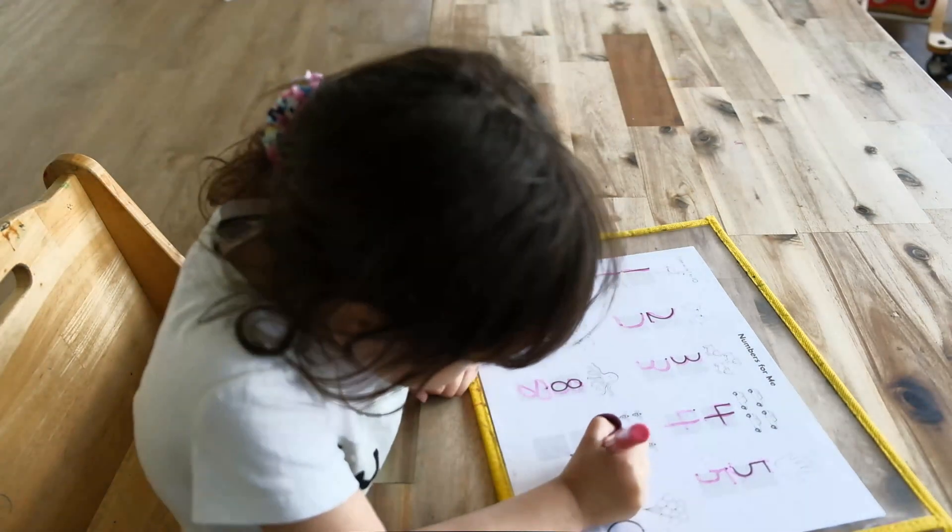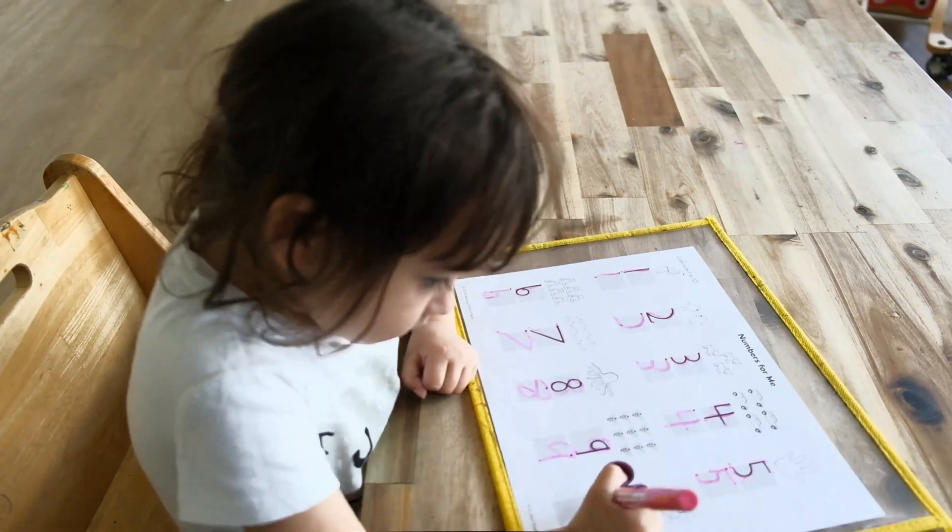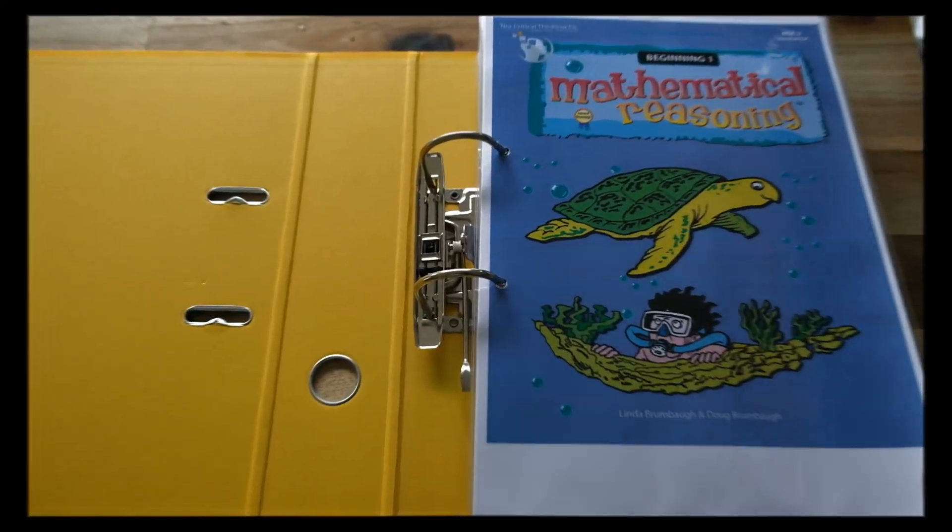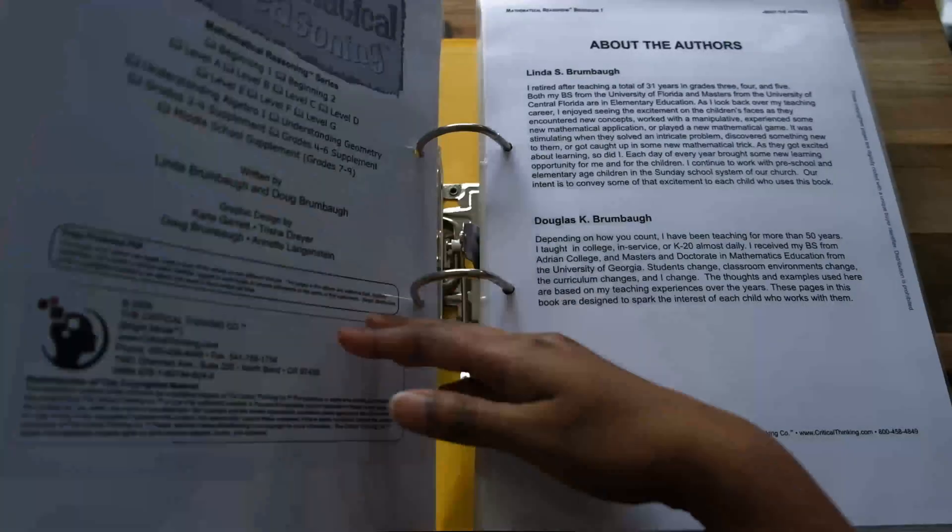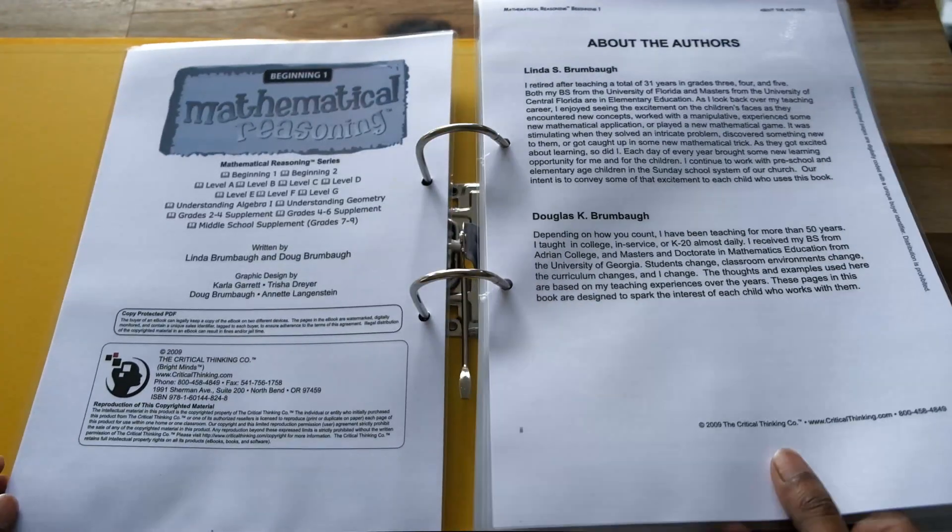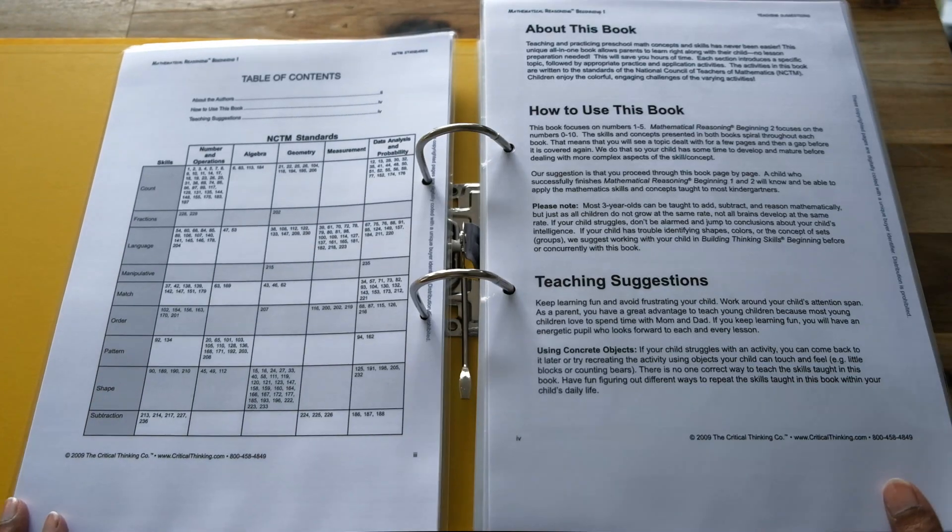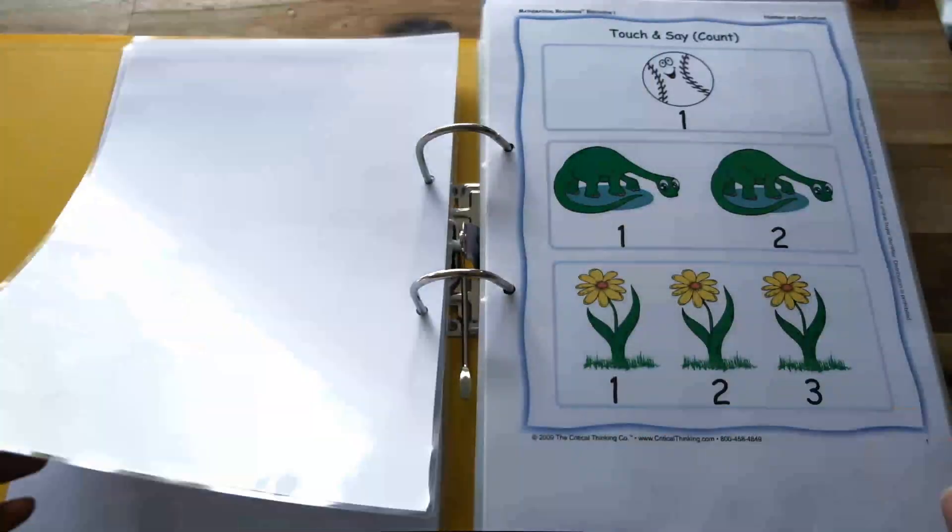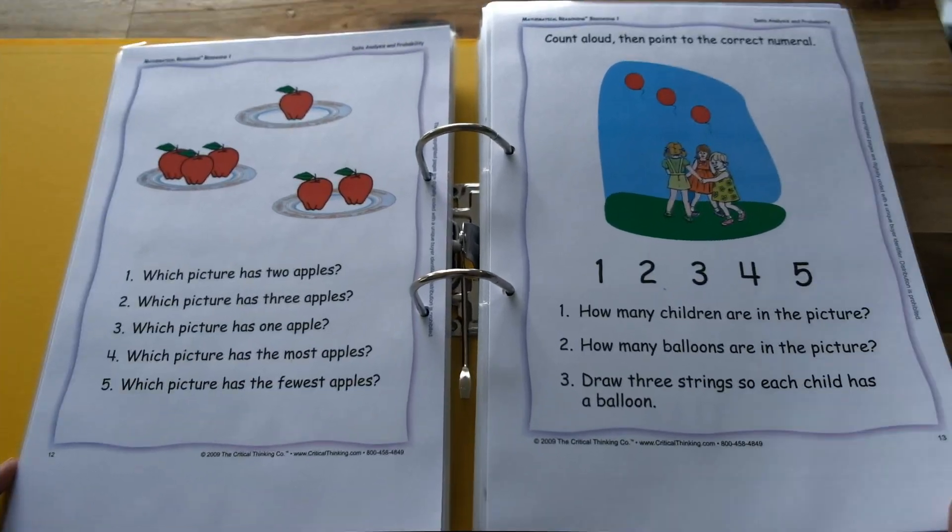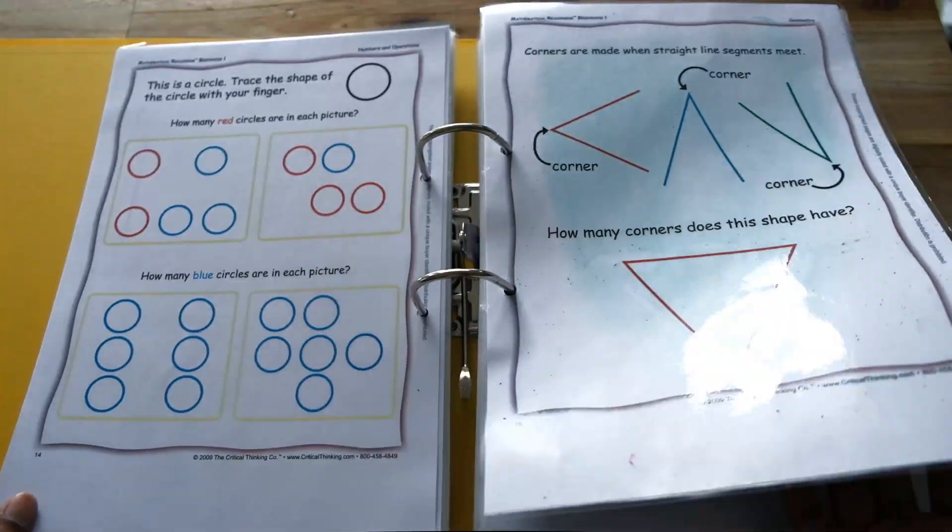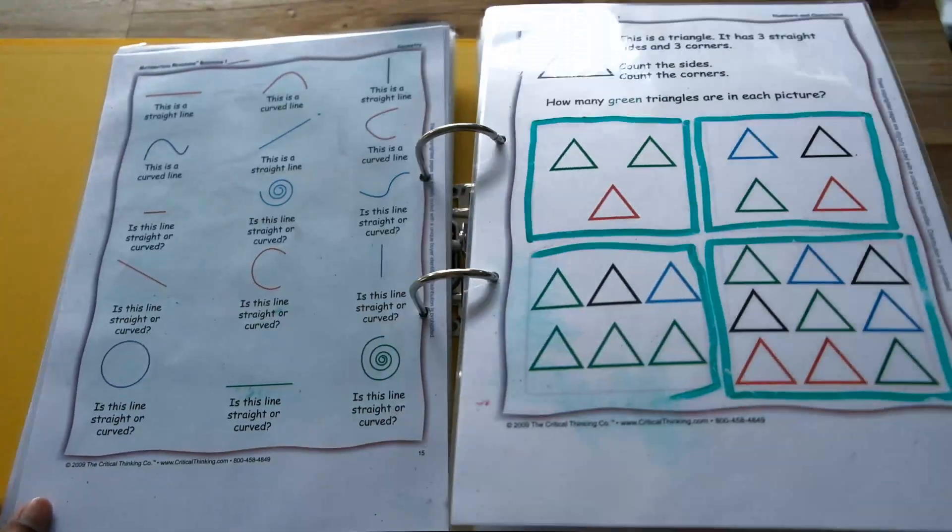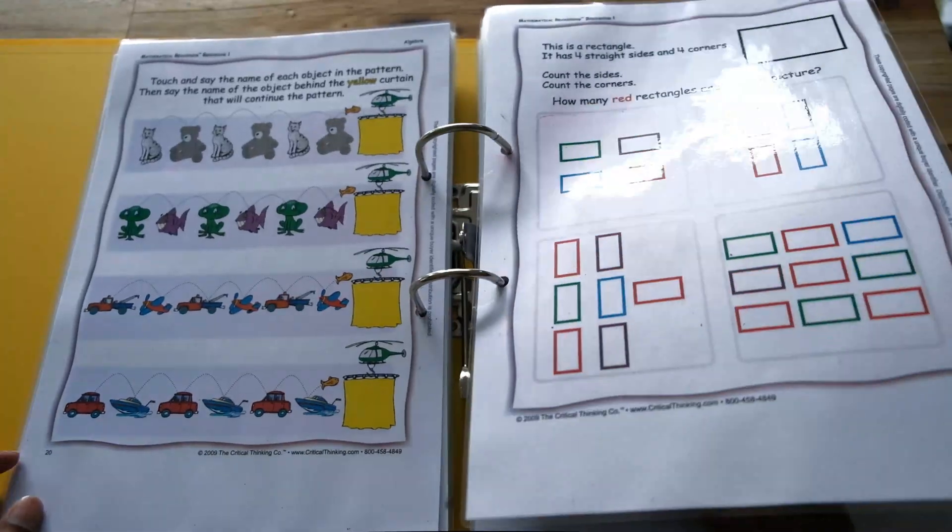So this is the first video in this series and I'm going to start off with the Mathematical Reasoning Beginning Level 1 by the Critical Thinking Company. You can purchase this as a hard copy or as an ebook. I just ended up getting the ebook and printing it at home. I did laminate the pages to make them more durable and so that I can use a dry erase marker on them but you certainly don't have to do that.